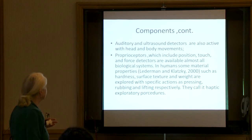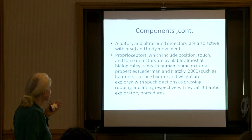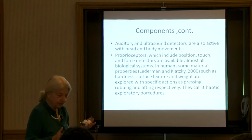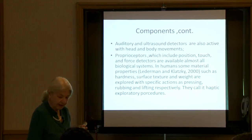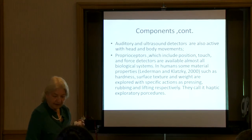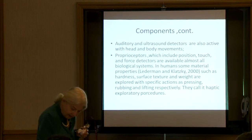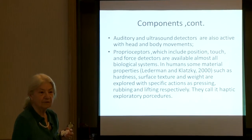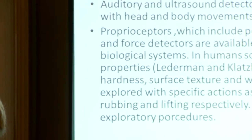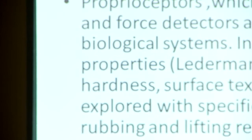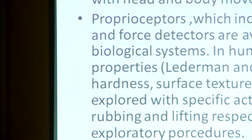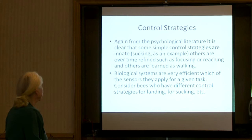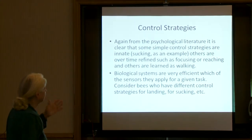In humans, some material properties such as hardness, surface texture, and weight involve specific exploratory actions. Lederman and Klatsky in 2000 documented that if you are asked blindly how hard a material is, you will invariably press perpendicularly on the surface. If you want to know the surface texture, you will do a rubbing motion. Specific actions — pressing, rubbing, and lifting — they call haptic exploratory procedures. From the psychological literature, it is clear that some simple control strategies are innate, for example sucking.